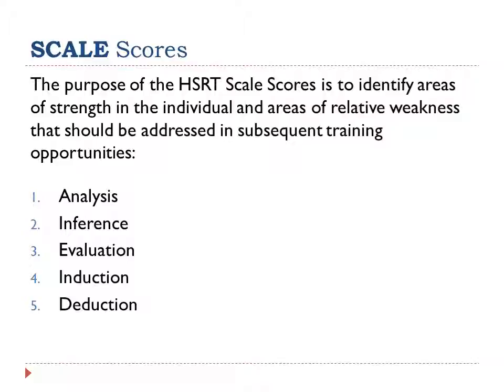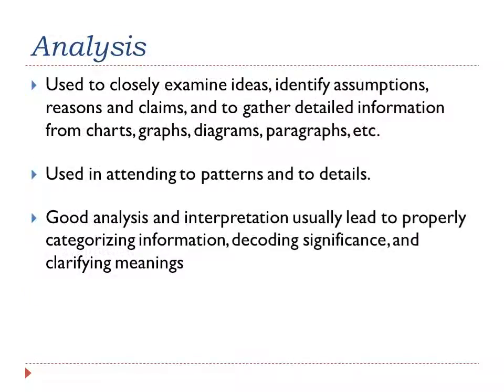The purpose of the HSRT scale scores is to identify areas of strength in the individual and areas of relative weakness that should be addressed in subsequent training. These include analysis, inference, evaluation, induction, and deduction. Analytical reasoning skills enable people to identify assumptions, reasons, and claims, and to examine how they interact in the formation of arguments. We use analysis to gather information from charts, graphs, diagrams, spoken language, and documents. People with strong analytical skills attend to patterns and details and identify how elements of a situation interact. Strong interpretation skills can support high-quality analysis by providing insight into the significance of what a person is saying or what something means.